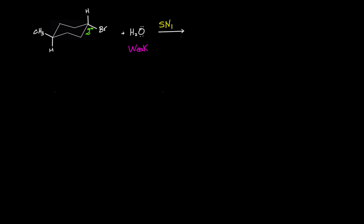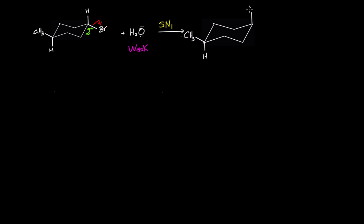The SN1 mechanism happens in two steps: the first step is the formation of the carbocation, and the second step is bond making with the nucleophile. The carbocation results from the heterolytic cleavage of the C–Br bond. On the unchanged carbon, CH₃ remains on equatorial and H remains on axial; on the reacting carbon, Br disappears leaving the axial H, and we have a positive charge — this is the carbocation.